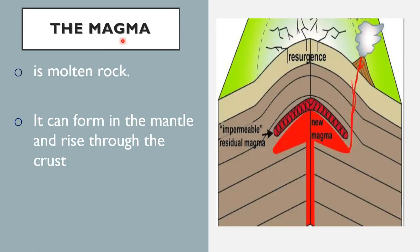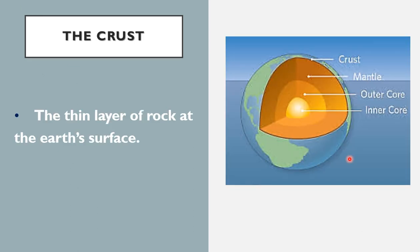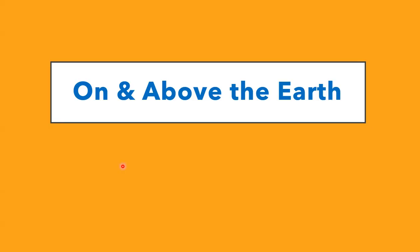Inside the Earth we also have magma. Magma is molten rock — rocks that have melted because of the high temperature and high pressure inside the Earth. When magma finds a weak part between the layers, it rises up through the crust, which is the surface of the Earth, forming a volcano. The crust is the thin layer of rock at the Earth's surface where we walk and live.